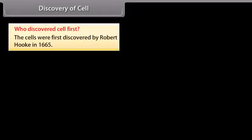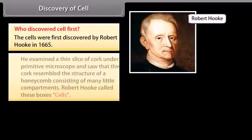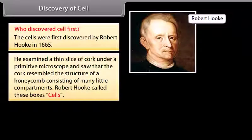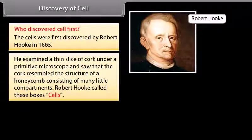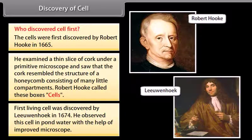Who discovered the cell first? Cells were first discovered by Robert Hooke in 1665. He examined a thin slice of cork under a primitive microscope and saw that the cork resembled the structure of a honeycomb consisting of many little compartments. Robert Hooke called these boxes 'cells'. The first living cell was discovered by Leeuwenhoek in 1674. He observed this cell in pond water with the help of an improved microscope.